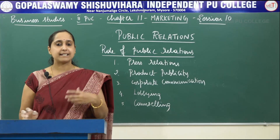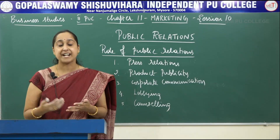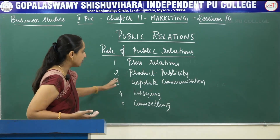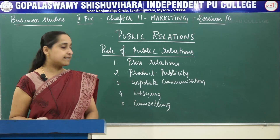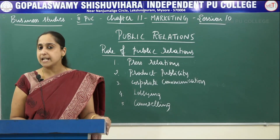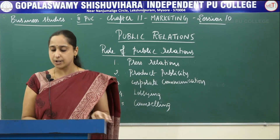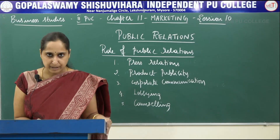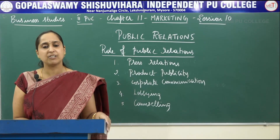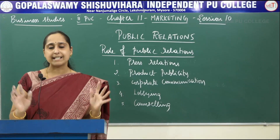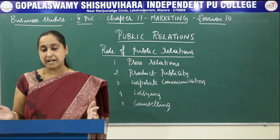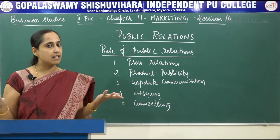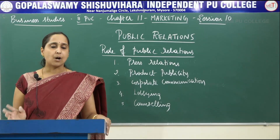Next is corporate communication — the image of the organization should be presented in a positive manner especially to the public and employees, for example through trade fairs, exhibitions, or media interactions. Next is lobbying — the organization sometimes has to deal with government officials and ministers in charge of corporate affairs, industry, or finance with respect to policies related to business and the economy. The government also seeks to maintain good relationships with various business associations.